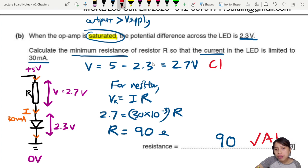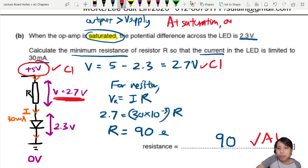One mark comes if you know that you have to find this potential difference of 2.7, and the other mark is do you know what it means to be saturated. Saturated means your output will be 5 volts. At saturation, when your op-amp is saturated, your output is the power supply, which is 5 volts. That's how we know it's 5 volts in the first place.